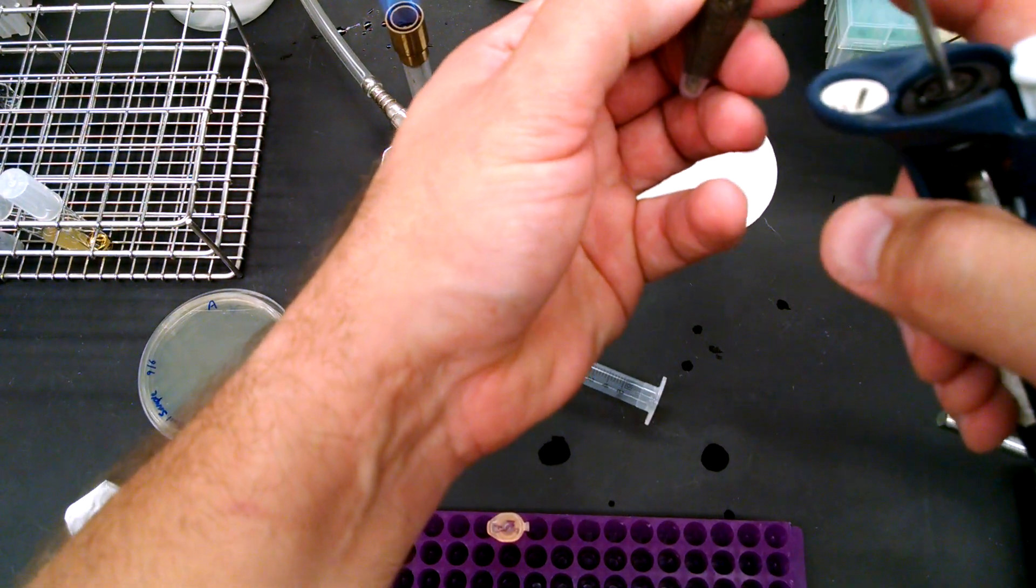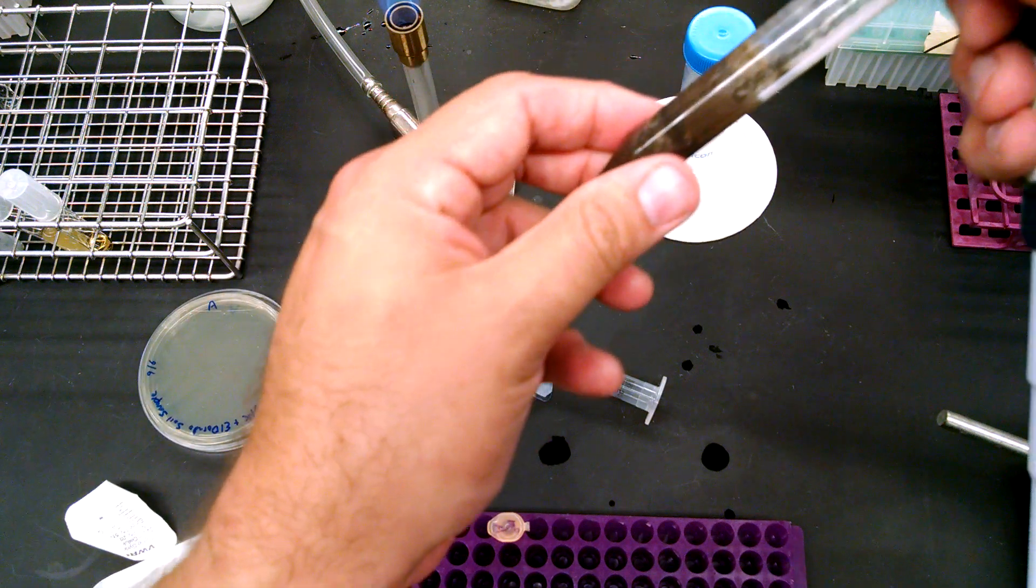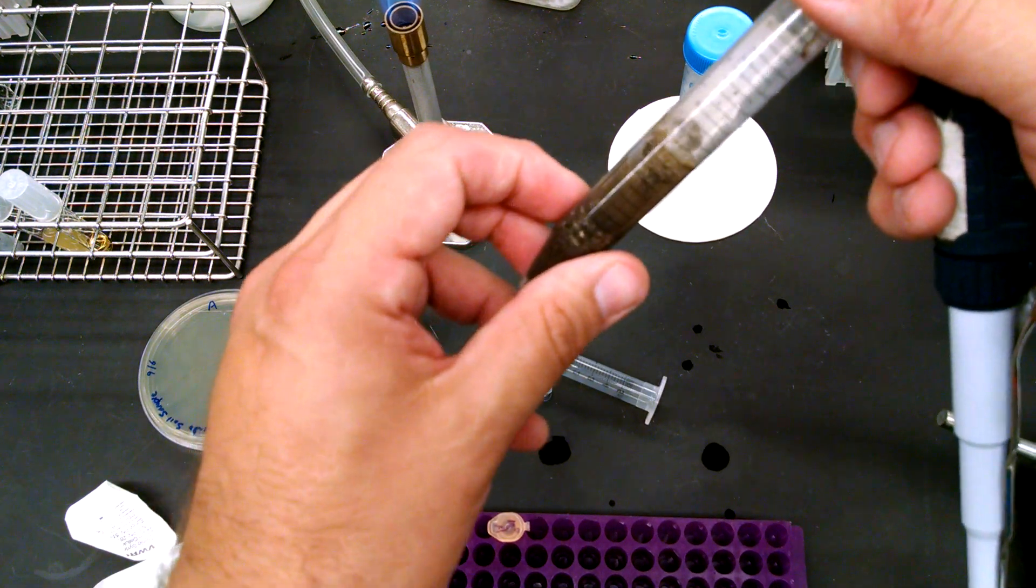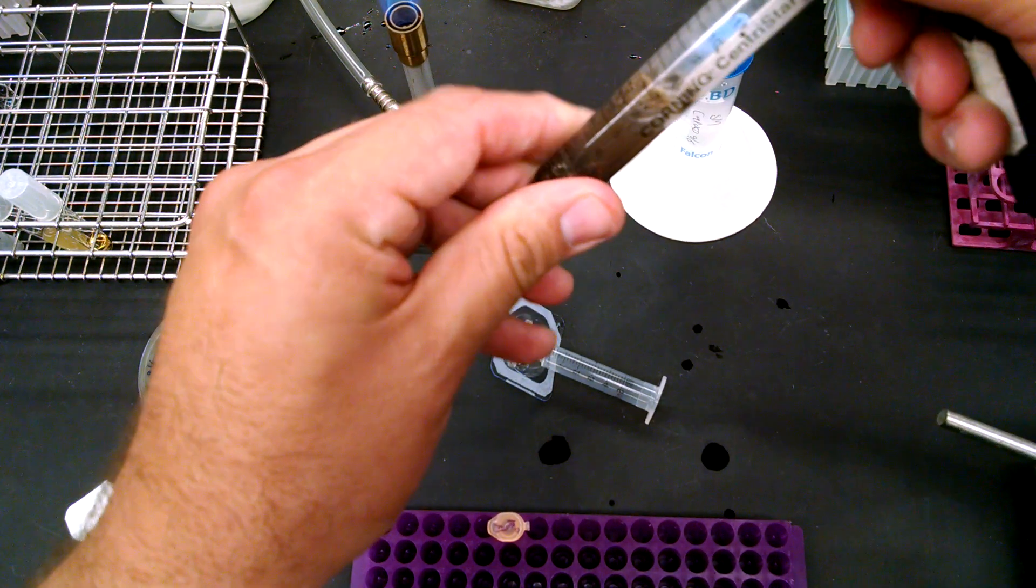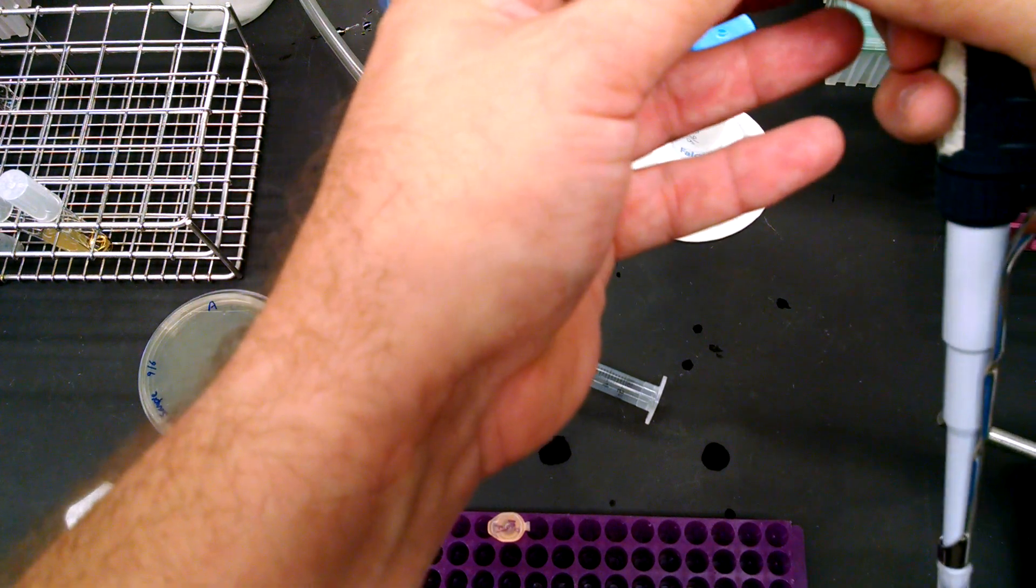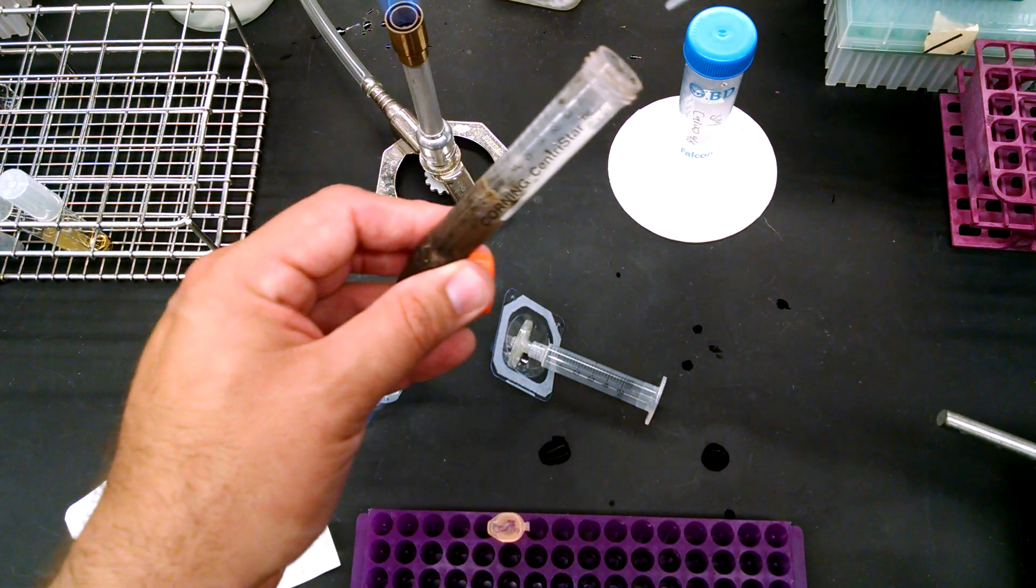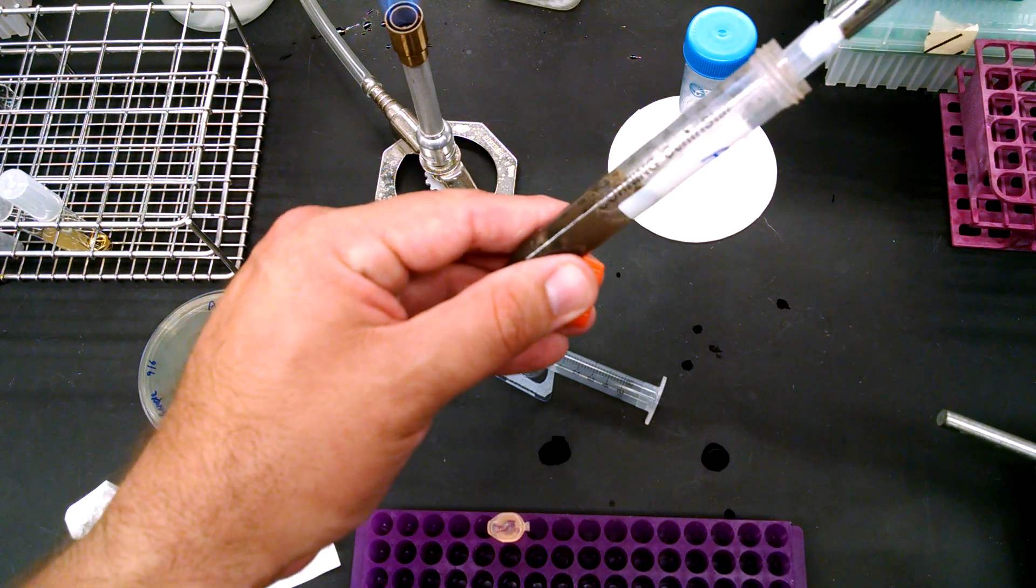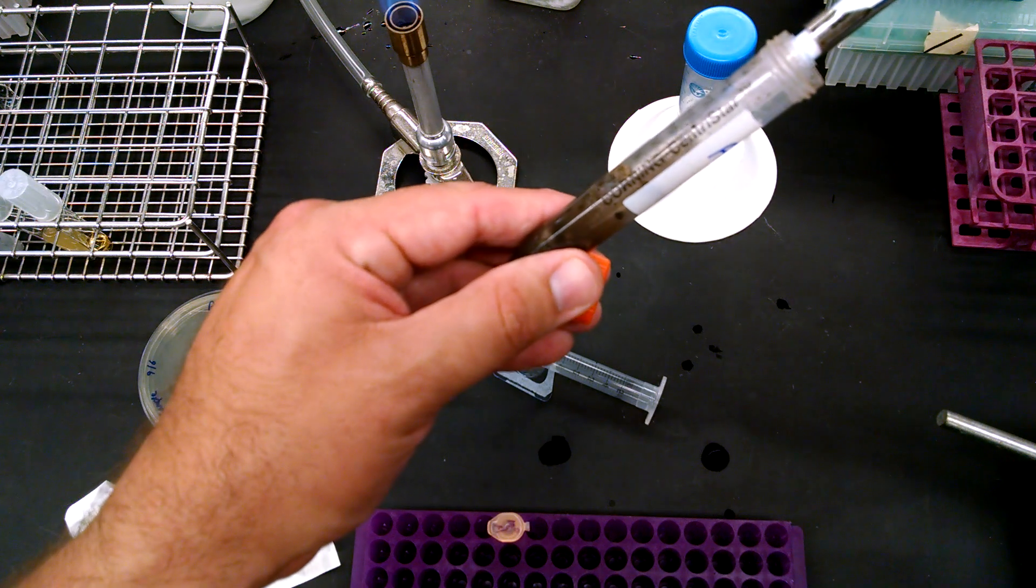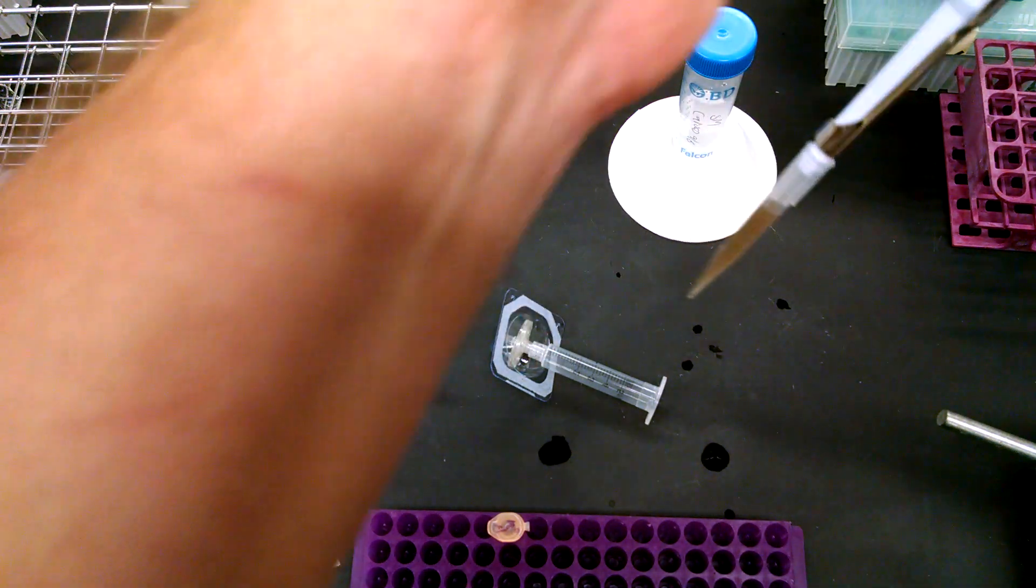And so here's our sample. And you can see there's some crud on top and we probably could have pushed the syringe through this, but let's just be safe. Don't flame these. They're plastic. Anyways, we're about to filter sterilize it anyways. And we'll pipette up a mil or so of this.